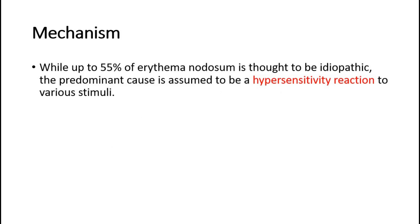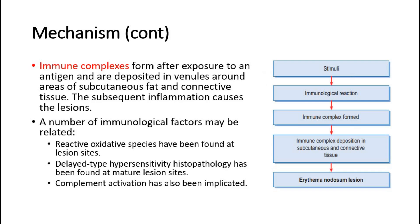For its mechanism, while up to 55% of erythema nodosum is thought to be idiopathic, the predominant cause is assumed to be a hypersensitivity reaction to various stimuli. Immune complexes form after exposure to an antigen and are deposited in venules around areas of subcutaneous fat and connective tissue. The subsequent inflammation causes the lesions. A number of immunological factors may be related: reactive oxidative species have been found at lesion sites, delayed type hypersensitivity histopathology has been found at mature lesion sites, and complement activation has also been implicated.